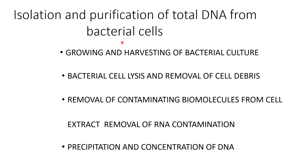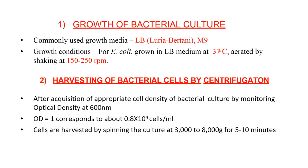There are four main steps involved in the isolation and purification of total DNA from bacterial cells. First is growing and harvesting of bacterial culture. Second is bacterial cell lysis and removal of cell debris. Third is removal of contaminating biomolecules from the cell extract, including removal of RNA contamination. The fourth step is precipitation and concentration of DNA.